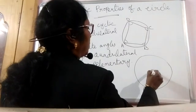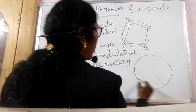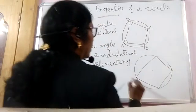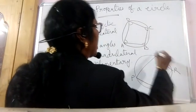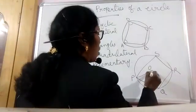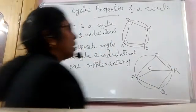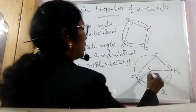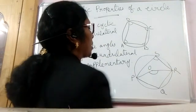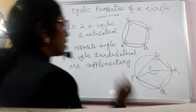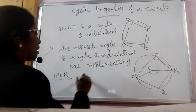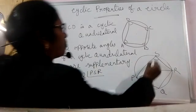Let me explain how. Let P, Q, R, S be a cyclic quadrilateral and O be the centre of the circle. Let me join O to P and O to R. You have already learnt that the angle at the centre of the circle is twice the angle it subtends at the circumference. That means angle P, O, R is equal to twice of angle P, S, R.